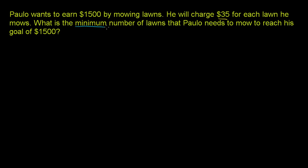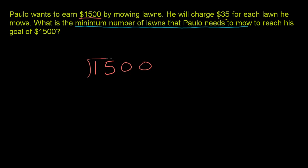We need to figure out the minimum number of lawns that Paulo needs to mow. Whatever that number is, that number times $35 — because that's how much he gets per lawn — needs to be greater than $1,500. To figure out that number, let's divide $1,500 by 35. Maybe it goes evenly, and that'll be the number of lawns he needs to mow. So we're going to take $1,500 and divide it by 35, because that's how much he gets paid per lawn.